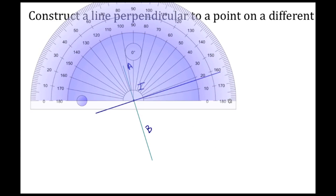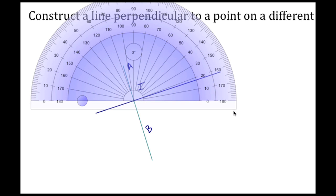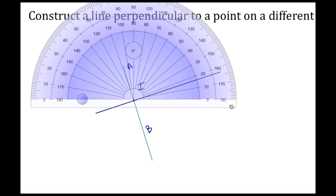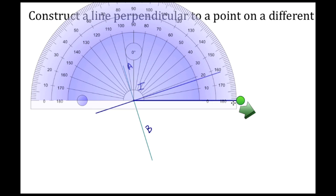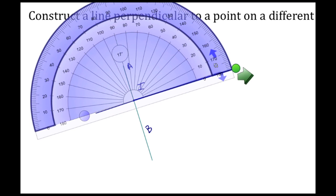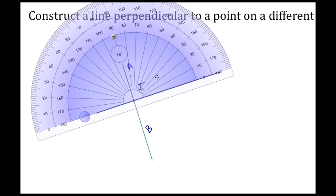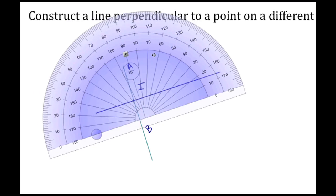So here we are with the protractor tool, placing this on the vertex there, and then I have to rotate. All right, here we see that this angle is measuring 90 degrees.